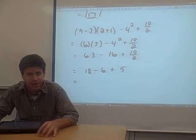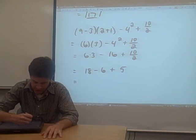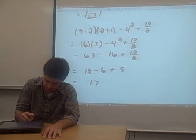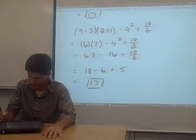Now we just add and subtract. I'm just going to do it from left to right. 18 minus six is 12. Add five, that's 17. So there you go.